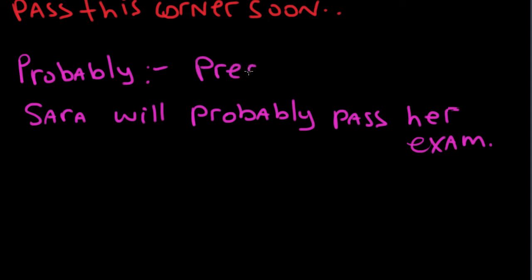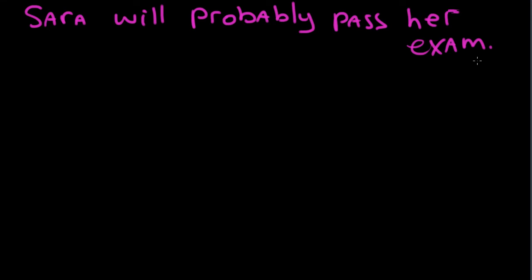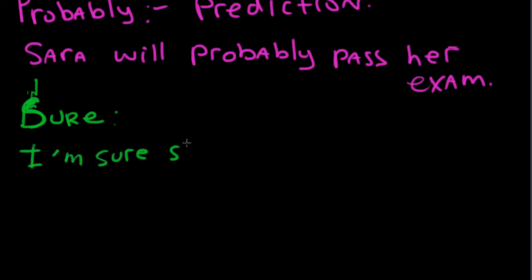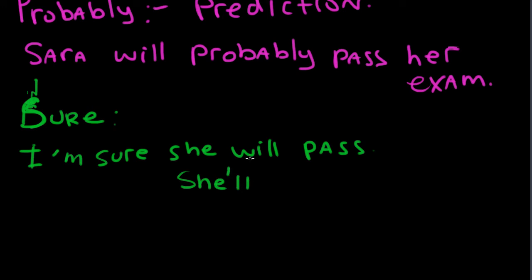This is a prediction about Sarah's future. We're not sure — it's not a plan and it's not an arrangement, but we are predicting that she might pass her exam. We also use 'I'm sure': Don't worry about the exam, I'm sure she will pass. We can also use the contraction — she'll pass — with the apostrophe to make the contraction.